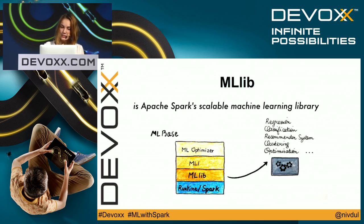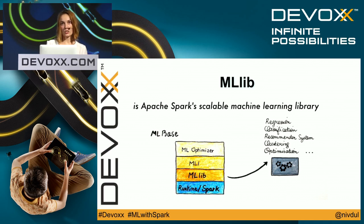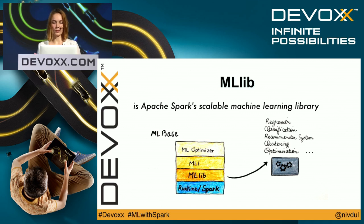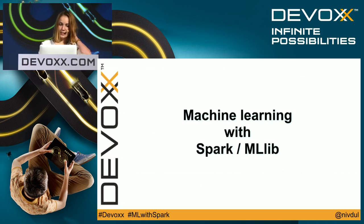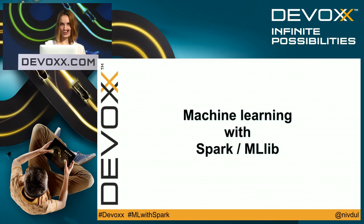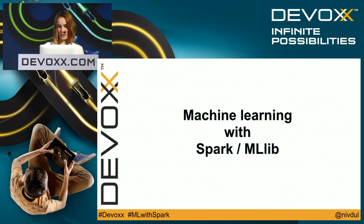And to finish, MLlib — a machine learning library. MLlib contains all common algorithms for regression, classification, recommender systems, clustering, and optimization. The first part is finished. I hope you're more familiar with Spark and machine learning. Now I'm going to show how to use Spark and MLlib for ML.